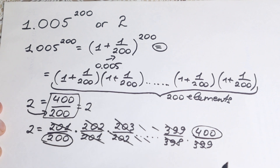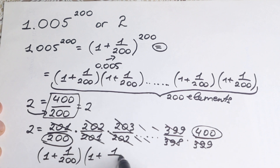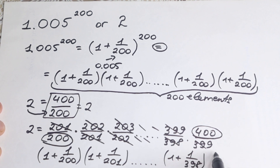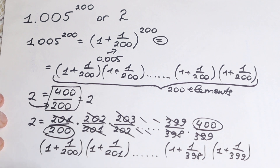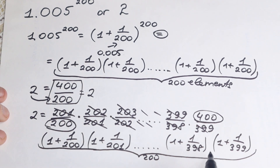Now let's rewrite each fraction in the telescoping product. We can write 201/200 as (1 + 1/200), the next element as (1 + 1/201), then (1 + 1/202), and so on up to (1 + 1/398) and (1 + 1/399). How many elements do we have? We have 200 elements, because we go from index 200 to 399.